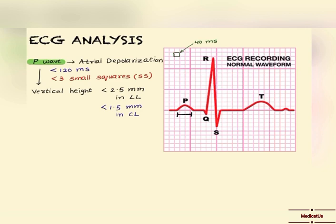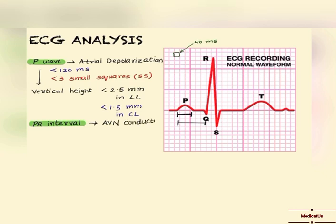If it is more than this it will lead to P pulmonale. About the PR interval — it is measured from the starting of the P wave to the starting of the QRS, and it indicates AV nodal conduction. Importantly, the PR interval is inversely proportional to heart rate.